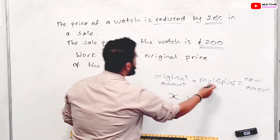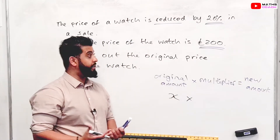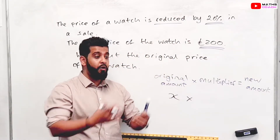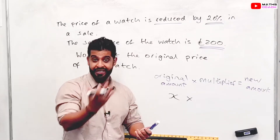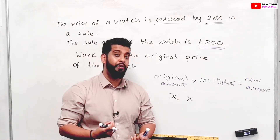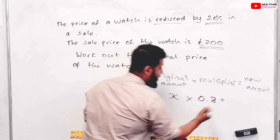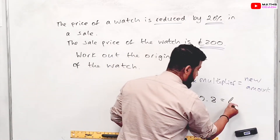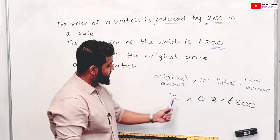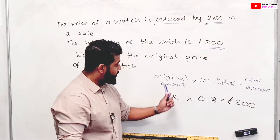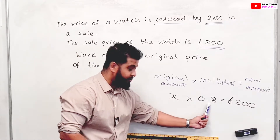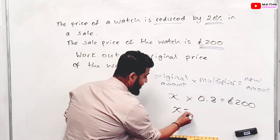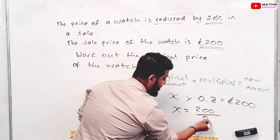The multiplier is what the percentage would be. If we're reducing something by 20% from the original 100%, we take 20 away from 100, which is 80%, and then the multiplier would be 0.8. The new amount — the amount you paid in the sale — is £200. So we have X times 0.8 equals £200. To find X, we do the opposite operation: instead of multiplying by 0.8, we divide by 0.8.